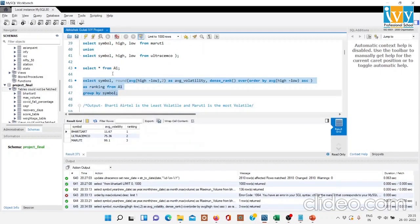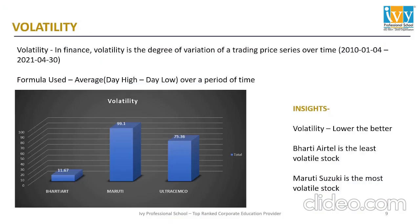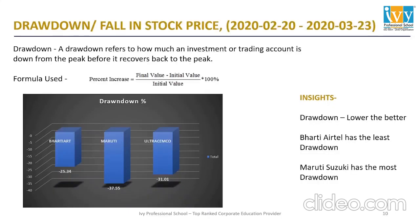We can see the average volatility of all the companies. Bharti Airtel's average volatility was 11.6, Maruti Suzuki's was 99.1, and Ultratech Cement's was 70.36. Since lower volatility is better, Bharti Airtel is the least volatile stock and Maruti Suzuki is the most volatile stock.